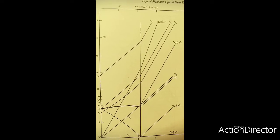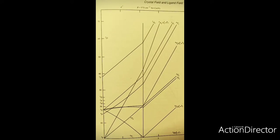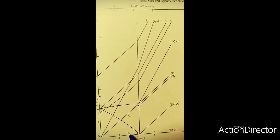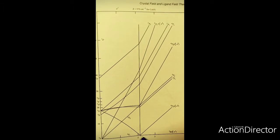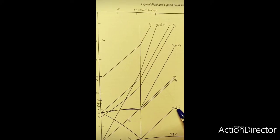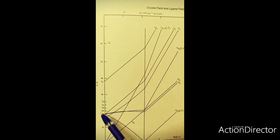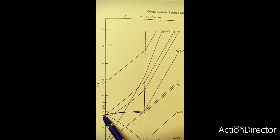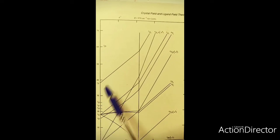This is the Tanabe-Sugano diagram for D7 configuration as drawn in textbooks. The 4F term is the ground state for the free metal ion, and 4T1G is the octahedral ground state for the weak field complex. After the crossover point, the energy of 4T1G increases. On the vertical axis there are many terms with doublet multiplicity: 2G, 2H, 2P, 2D, 2F, 2D.